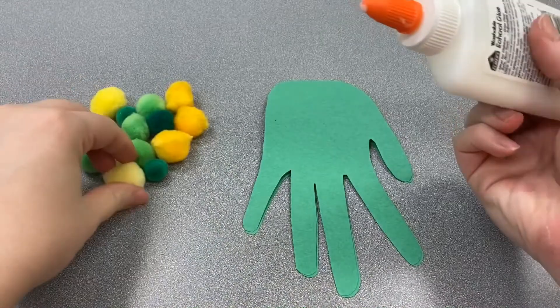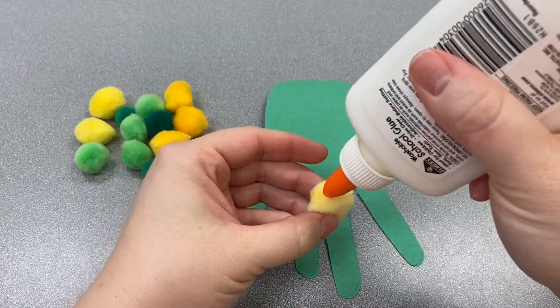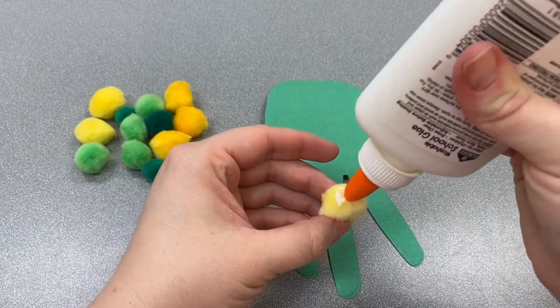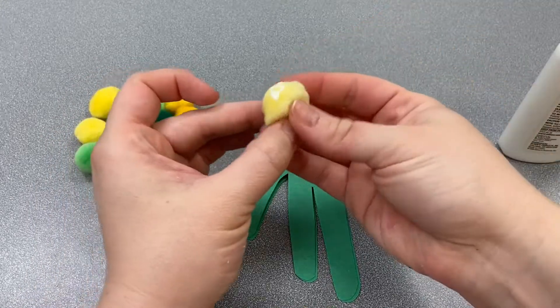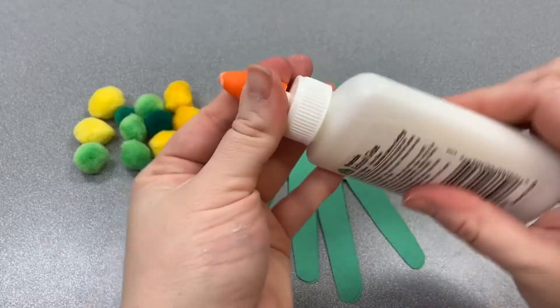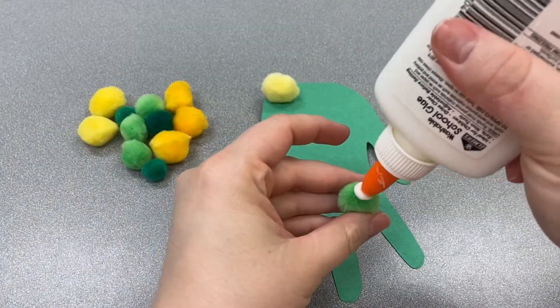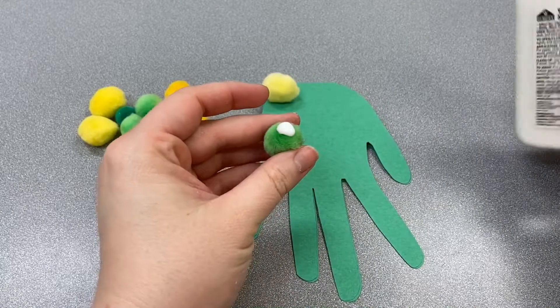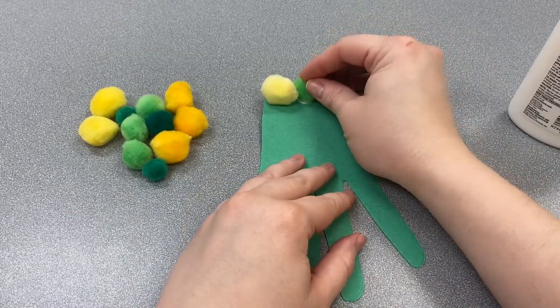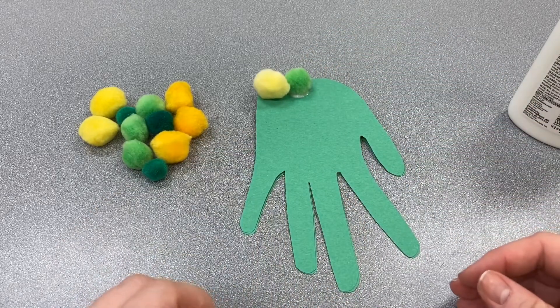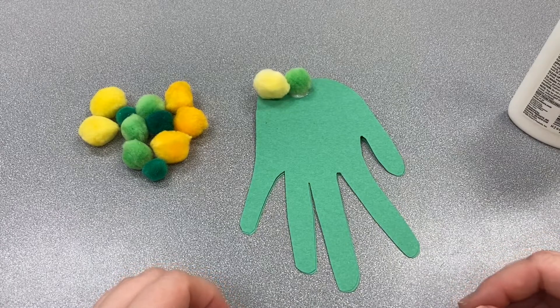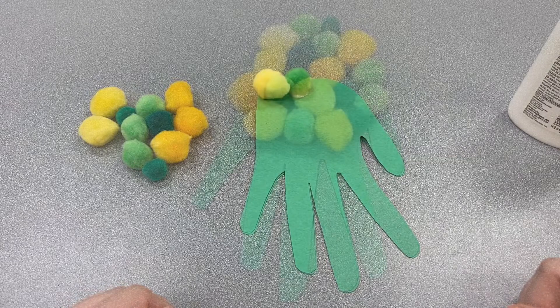So I'll show you how to glue a couple down. Put some glue on the pom-pom and just stick it up there. Do a little smaller one. Stick it there. You can put them on however you like. Just make sure you use enough glue that they will stick but not too much that it'll make the paper soggy.